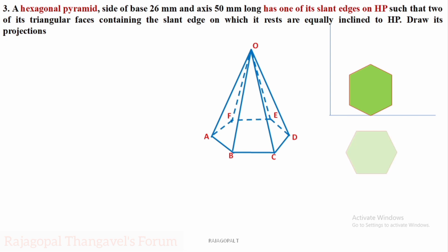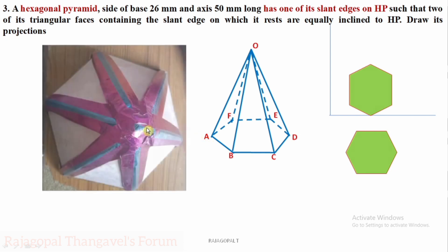As per first angle projection, if you rotate 90 degrees clockwise, the top view of the hexagon will be like this. The edge which is now parallel to VP or perpendicular to HP becomes parallel to XY. Looking at the actual model, the slant edge is fixed with a corner on the base. The two triangular faces on either side of that slant edge are equally inclined, so the top view of the hexagonal pyramid shows a hexagonal position where two sides are parallel to XY.